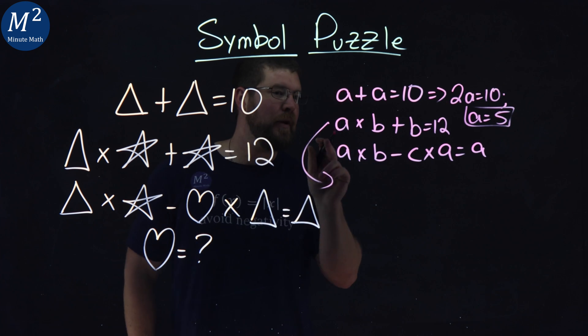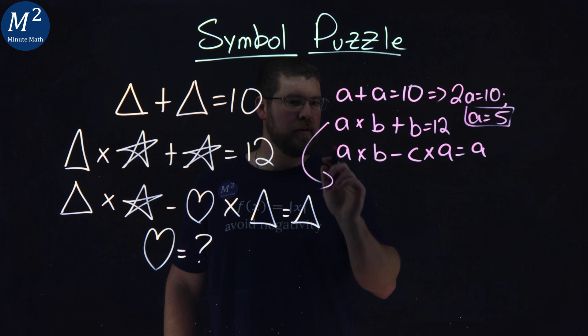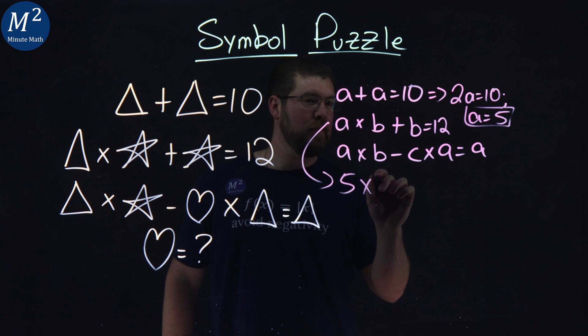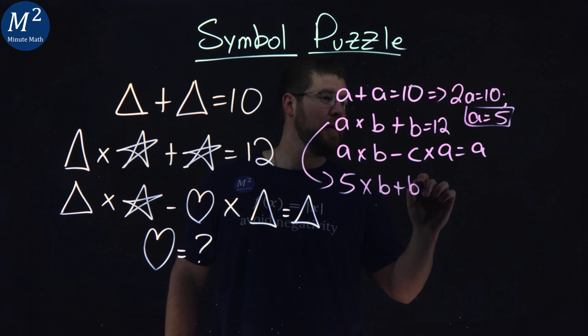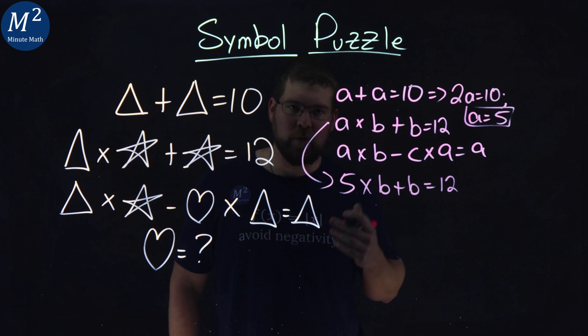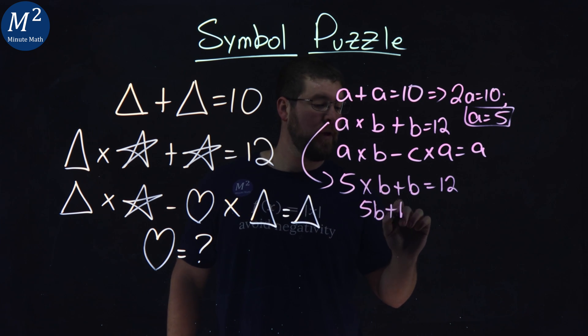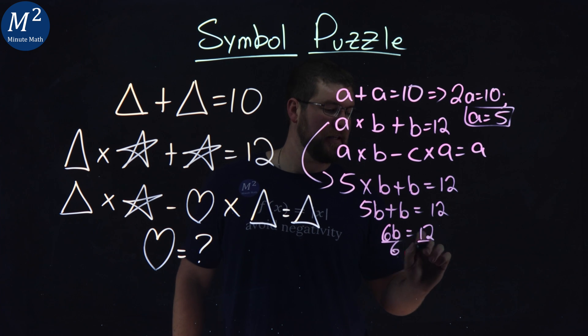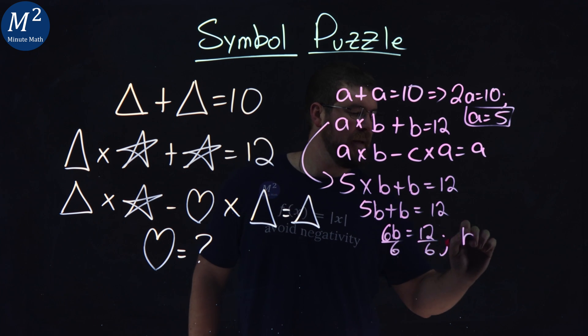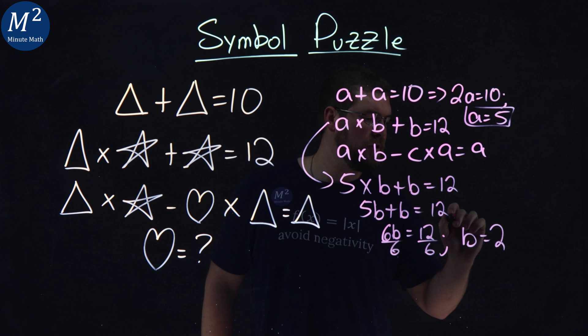We can take that information and plug it into our second equation. We have 5 times B plus B equals 12. 5B plus 1B is 6B equals 12. Divide both sides by 6, and B equals 2.